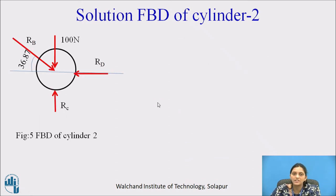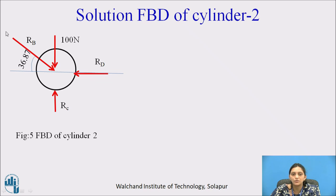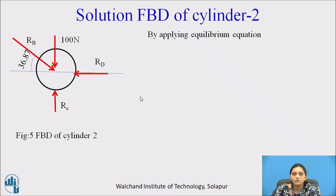Now we will analyze cylinder 2. Looking at the free body diagram, there are four forces: self-weight of 100 Newton, reaction at point C (RC), reaction at point D (RD), and the mutual reaction RB. Since there are more than three forces, Lami's theorem is not applicable, so we solve using equilibrium equations.